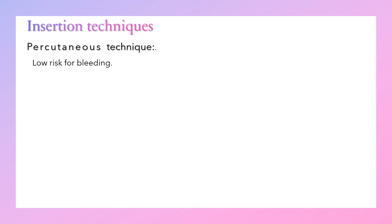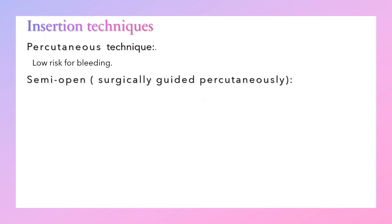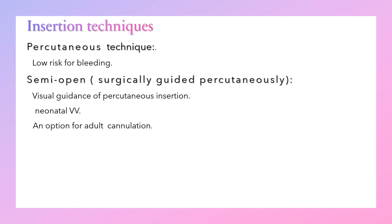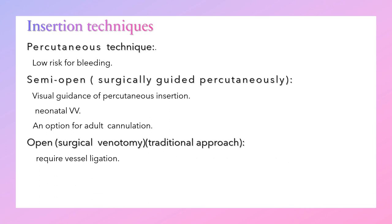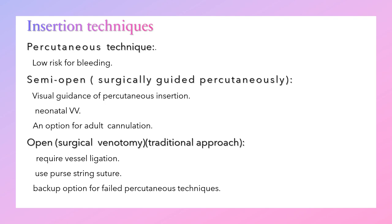Regarding cannula insertion techniques, the most common is the percutaneous technique, which has a low risk of bleeding. The semi-open technique provides visual guidance for percutaneous insertion and can be used for veno-venous insertion. The open surgical technique requires vessel ligation and use of purse-string sutures, and is a backup option for failed percutaneous technique.